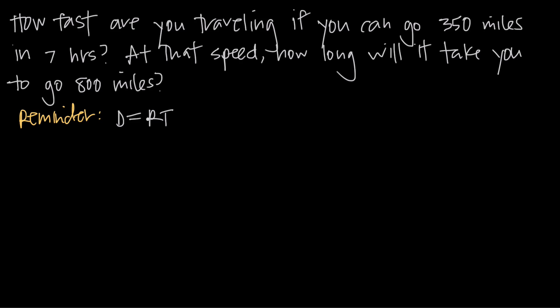If you multiply the pace or the speed at which you're going by the amount of time that you've been going, you get the amount of distance that you've gone.